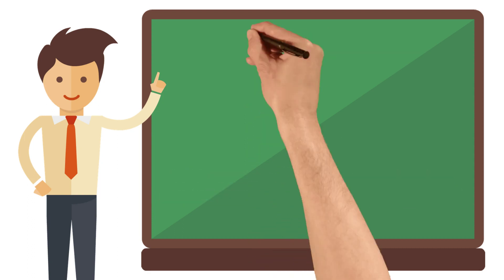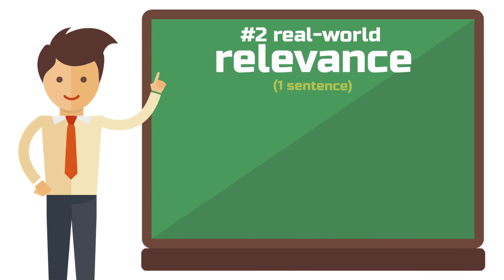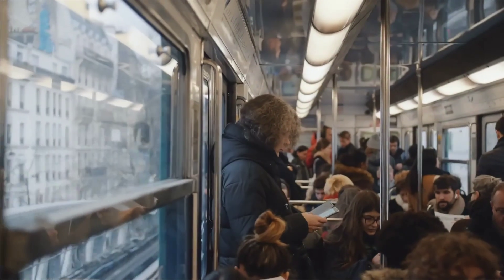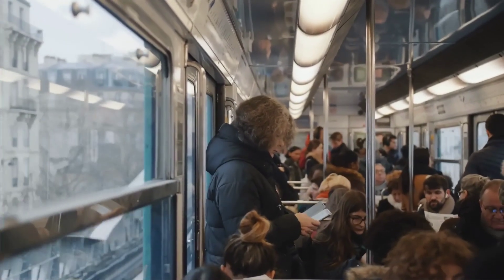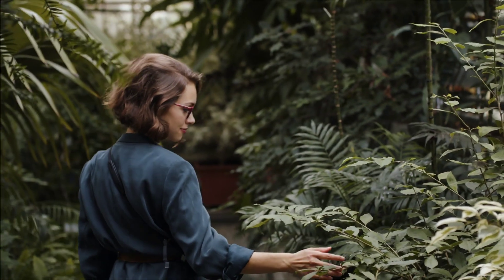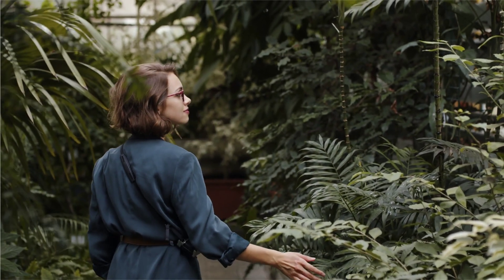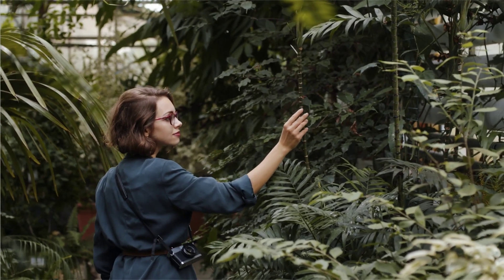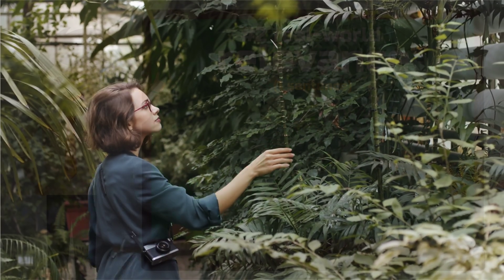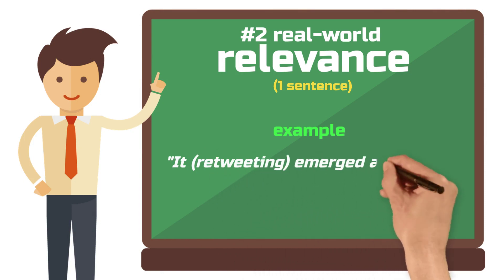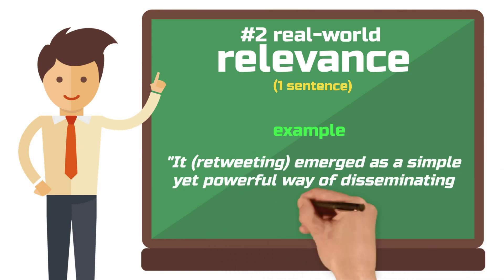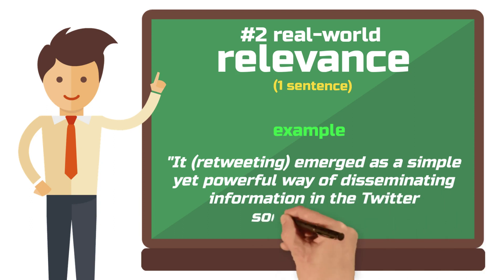Step 2: The relevance — why is this topic relevant to your field? One sentence. This is where your argument practically begins: why should anyone care about this topic? Anyone often means the researchers who are the potential audience of your work. But your work also has to be of societal or practical importance, in the best case. For the relevance sentence, you could write: 'It — so retweeting — emerged as a simple yet powerful way of disseminating information in the Twitter social network.'